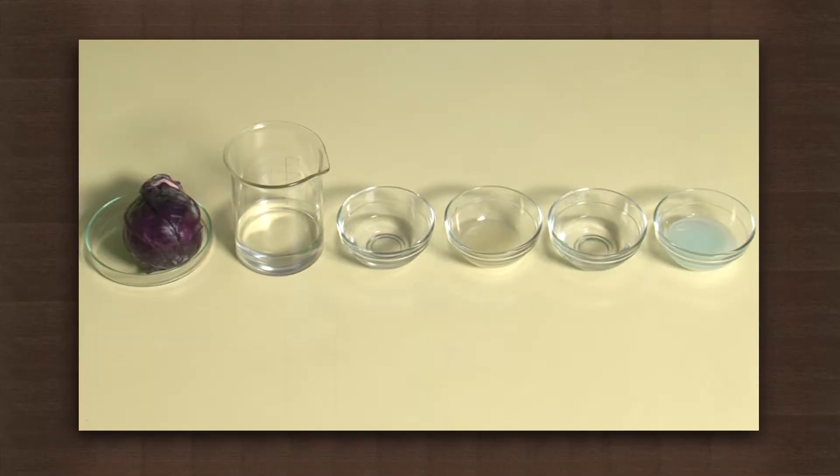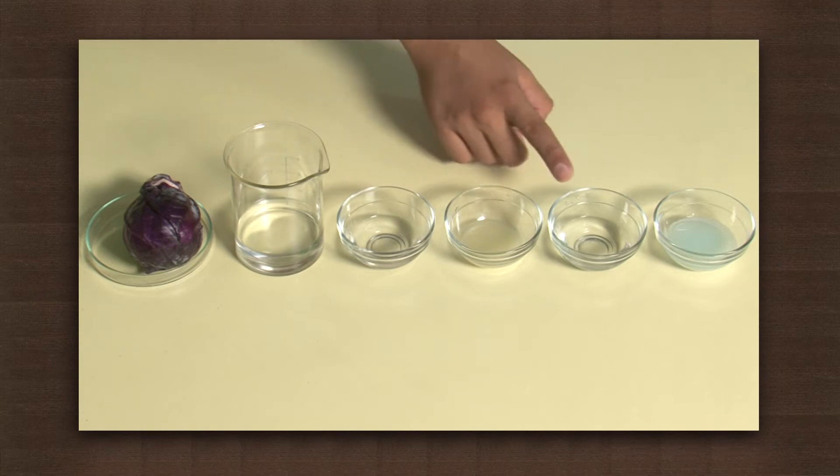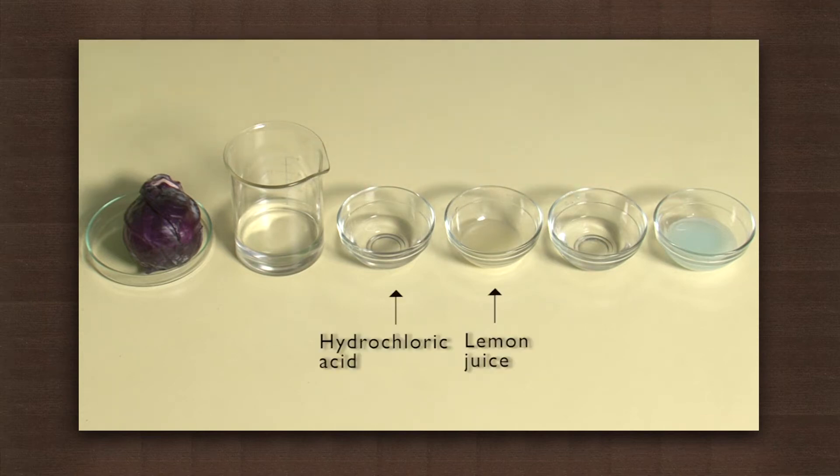For this we will need red cabbage, some methanol to get the pigment out of it, and to test we will use a couple of acids, dilute hydrochloric acid and lemon juice, and a couple of bases, a solution of sodium hydroxide and some soap solution.